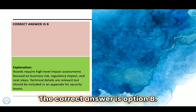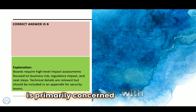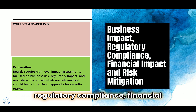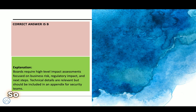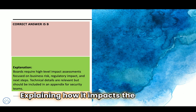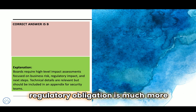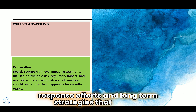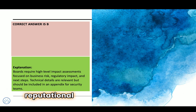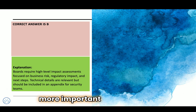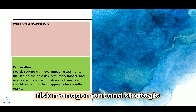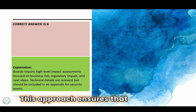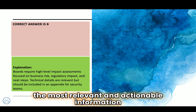The correct answer is Option B. The board of directors is primarily concerned with business impact, regulatory compliance, financial implications, and risk mitigation — not technical details. Providing a clear executive-level summary of the breach is most effective. This includes explaining how it impacts customers, business operations, and regulatory obligations; outlining steps taken to mitigate risk and ongoing response efforts; and addressing legal and reputational concerns with a focus on business resilience. This approach ensures the board receives the most relevant and actionable information.